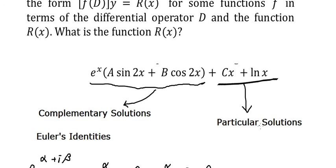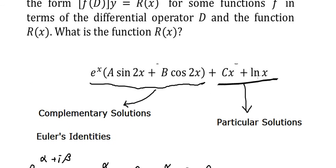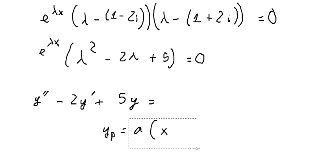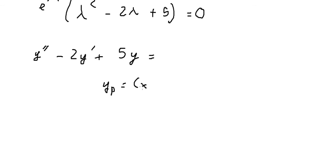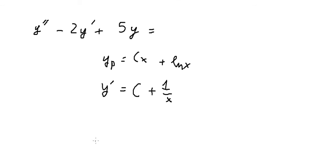Now let's go to particular solutions. We set yp equal to Cs plus ln(x). The first derivative gives us C plus 1 over x, and the second derivative gives us negative 1 over x squared.